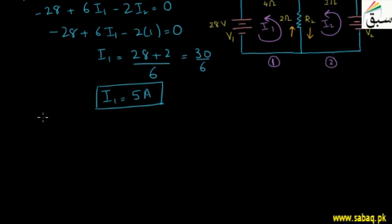Here we can see that what is IR1? Only I1 passes through it, which is 5A. And what is IR2? IR2 is our difference of I1 minus I2, which is 5 minus 1. So we get 4A for IR2.